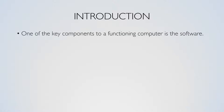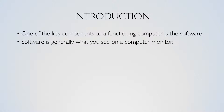Introduction. One of the key components to a functioning computer is the software. Software is usually what you see on a computer monitor. Software is a set of machine-readable instructions, often in the form of a program that directs a processor to perform specific operations.